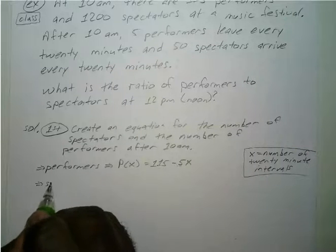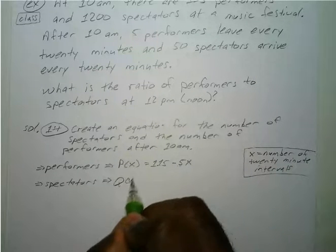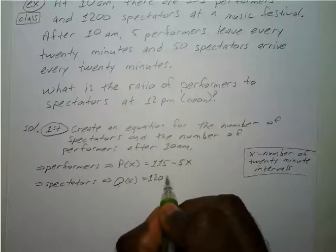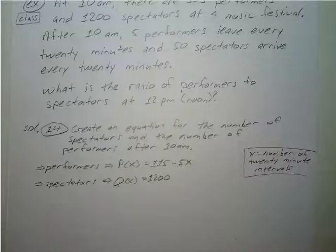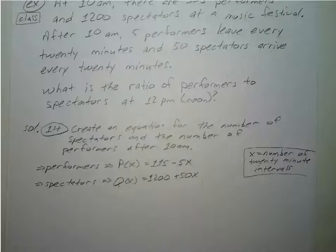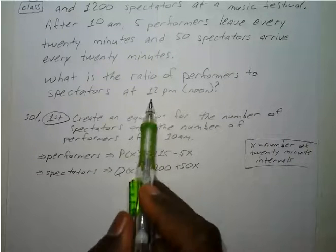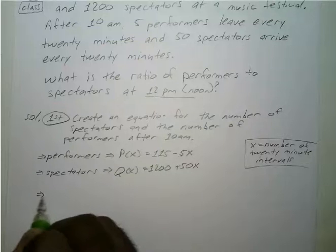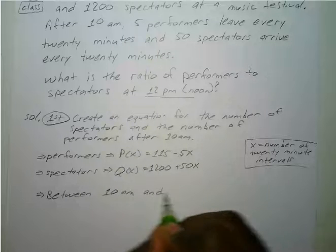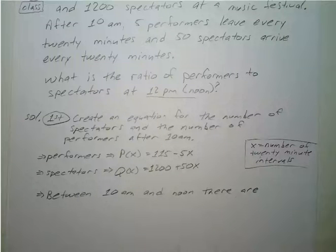Now for the spectators, we'll let that be q of x. We see that 1,200 are there at 10 a.m., and then 50 arrive every 20 minutes. Between 10 a.m. and noon there are six 20-minute intervals — it's two hours, so you count 20, 40, 60 minutes twice, giving six intervals.